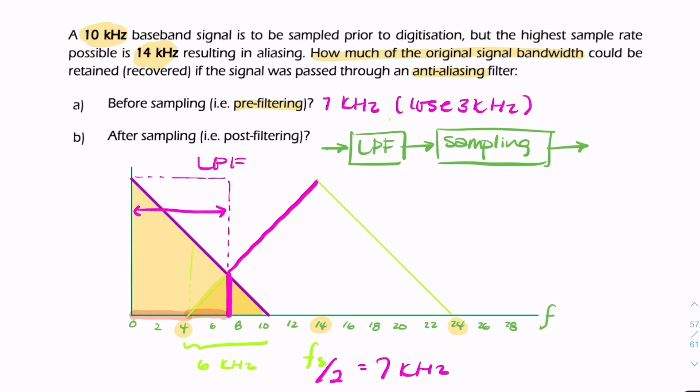7 kHz width. It would be 14 minus 7 equals 7, and 14 plus 7 equals 21. The spectrum would look like that and continue. There would be no aliasing or spectral overlap, but we would effectively lose 3 kHz of the original spectrum.